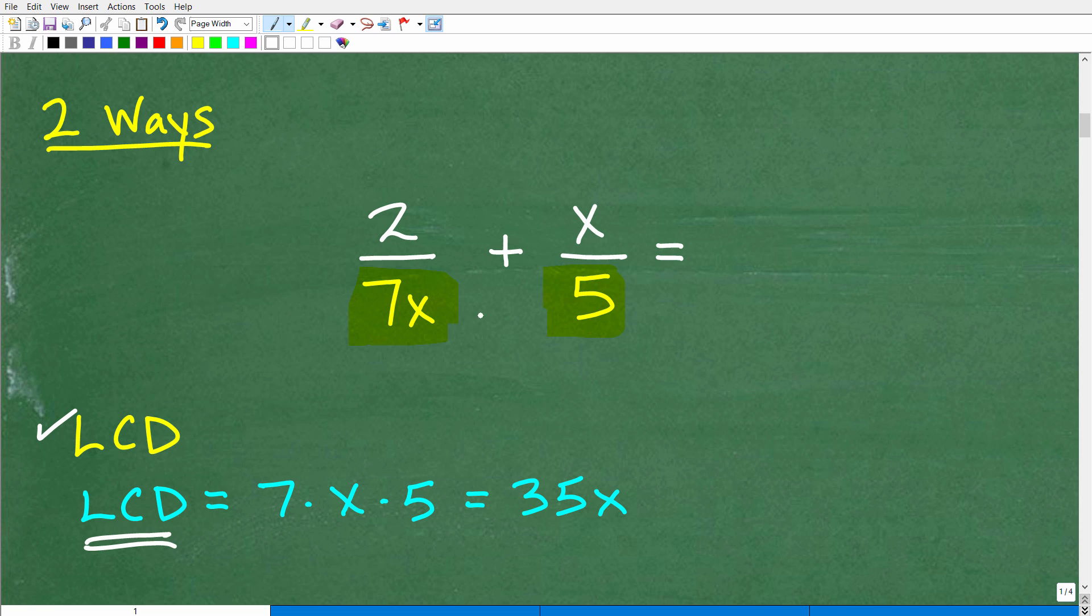But effectively, to find the LCD, depending on how many denominators you have here, here we have two, we have to look at the prime factors of the numbers or expressions in each of these denominators. And we have to kind of represent them all in one big product. So in other words, the prime factors of 7 and x is 7 times x. 7 is a prime number, and x is a factor as well. And then here, 5 is the only prime factor of 5. So the LCD, the lowest common denominator, is going to be the product of all the prime factors of all your denominators. So in this case, it's going to be 7 times x times 5, which is 35x, okay?